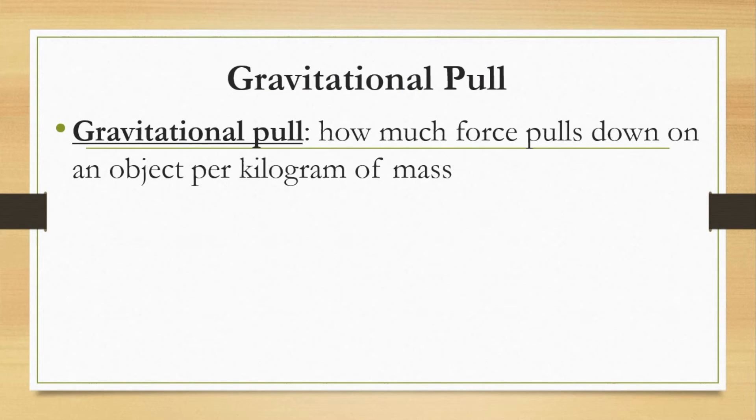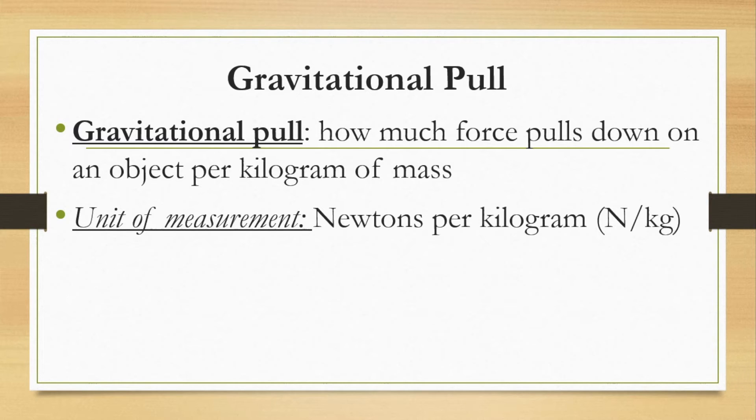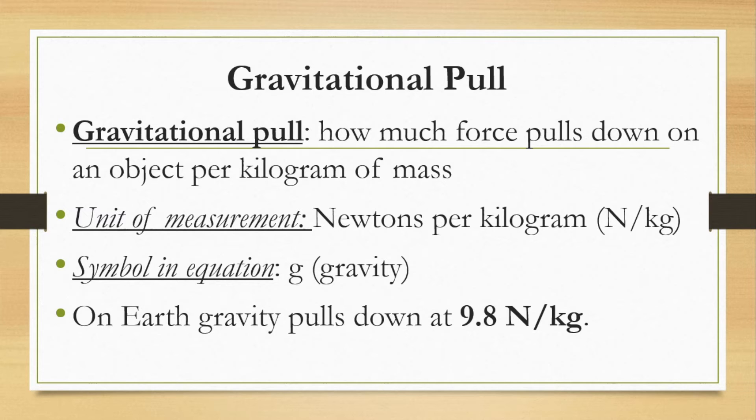Gravitational pull is how much force pulls down on an object per kilogram of mass. The units of measurement for gravitational pull are going to be Newtons per kilogram. So capital N over kg. The symbol is just a lowercase g and that just stands for gravity. On Earth, our gravitational pull is going to be 9.8 Newtons per kilogram. On other planets it will have different values. On the moon it will be smaller. The moon is around 1.7 Newtons per kilogram.